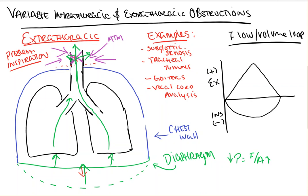On the flow volume loop, these patients will have a normal expiration curve, but will then have a stunted inspiration portion of their loop.